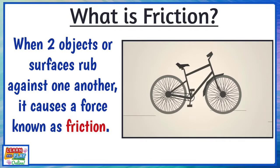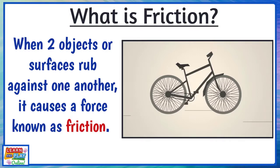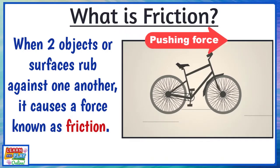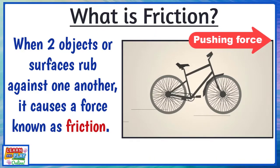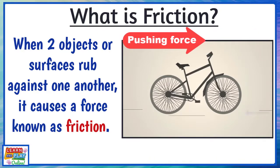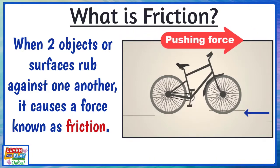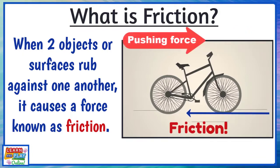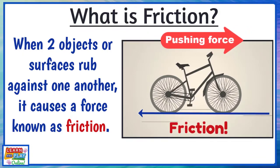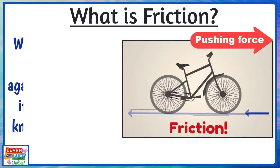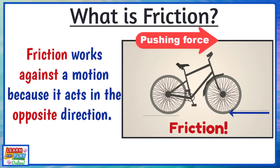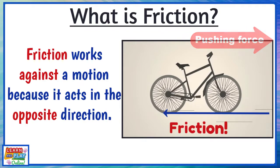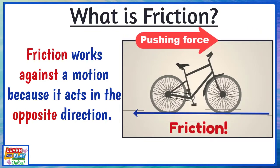Take a look at this bike for example. There is a pushing motion to move it forwards, and as it moves forward, the wheels of the bike are rubbing against the surface of the ground. Friction is the resistance force that is pushing in the opposite direction of the wheels of the bike. Friction works against a motion because it acts in the opposite direction.